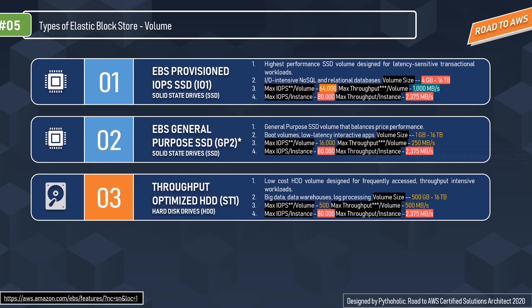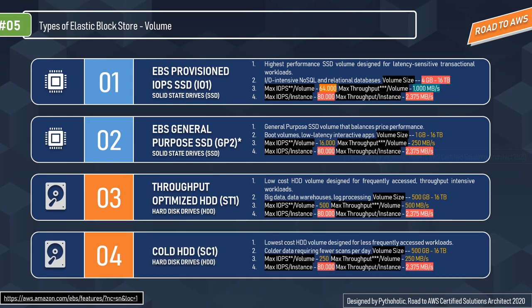Moving to HDD-type storage: Throughput Optimized HDD — the st1 volume. st1 is backed by hard disk drive and is ideal for frequently accessed, throughput-intensive workloads with large data sets and large I/O sizes, such as MapReduce, Kafka, log processing, data warehouse, and ETL workloads. Performance is measured in throughput (megabytes per second). Volume size: 500 GB to 16 TB. Max IOPS per volume: 500. Max throughput per volume: 500 MB/s. Max IOPS per instance: 80,000. Max throughput per instance: 2,375 MB/s.